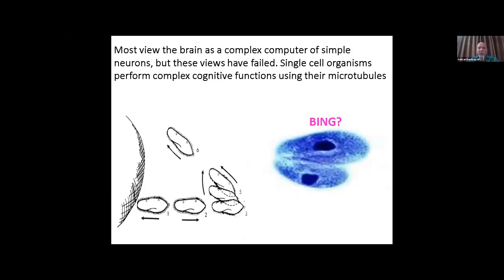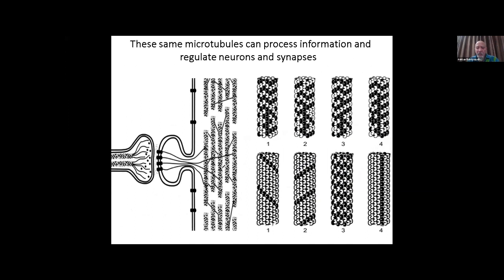Most view the brain as a complex computer of simple neurons. Theories like IIT and Global Neuronal Workspace are all complex arrangements of very simple neurons—they could be bits, one or zero. But if we look at a single cell like a paramecium, it would be one bit, but it's pretty clever. It can swim around, find food, find mates, even have sex as we see here. It's obviously not one bit, it's much more intelligent and cognitive than that. Something else must be going on, and that I believe to be the microtubules inside the neurons.